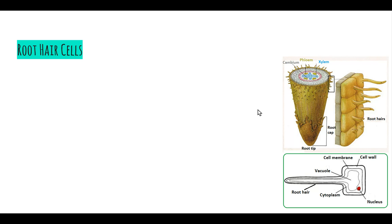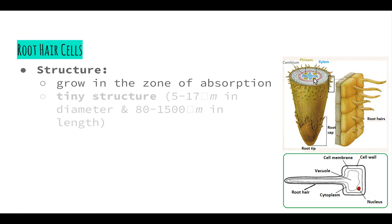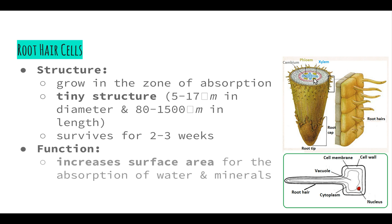We've already had a little look at root hair cells. Their structure is that they are grown in the zone of absorption — the end of the root. The root hairs grow on the outer surface of the root in the area under the soil involved in the absorption of water. They are tiny structures, five to seven micrometers in diameter and 80 to 1500 micrometers in length, so they are extremely small. They only survive for two to three weeks and then are replaced with new cells. Their function is to increase the surface area for the absorption of water and minerals.